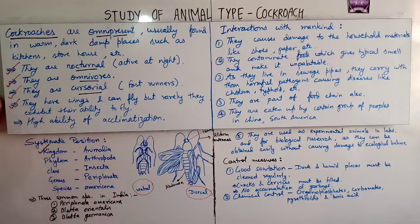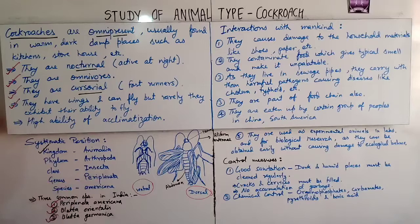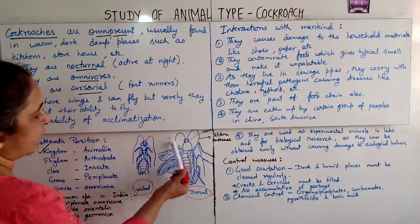In India, there are three common species of cockroach: first, Periplaneta americana; second, Blatta orientalis; and third, Blatta germanica. These are the three common species found in India. Here in the structure, you can also see the filiform antenna.